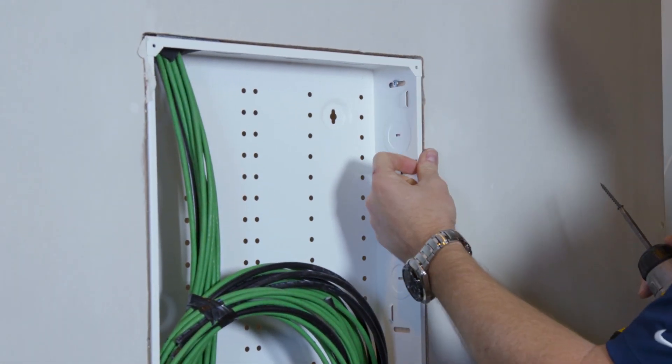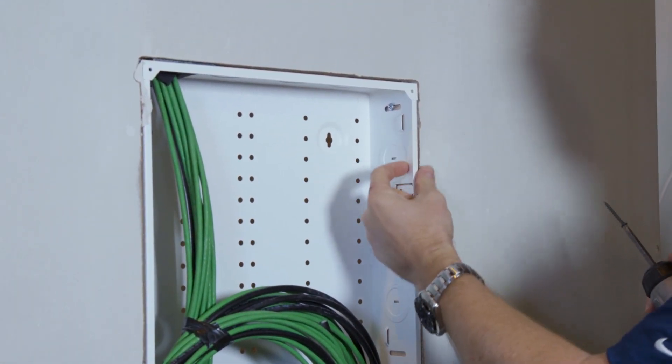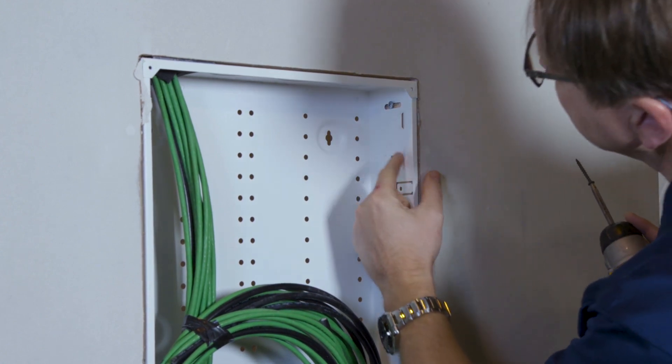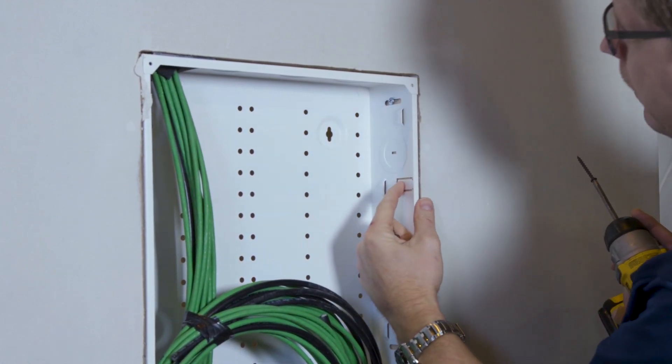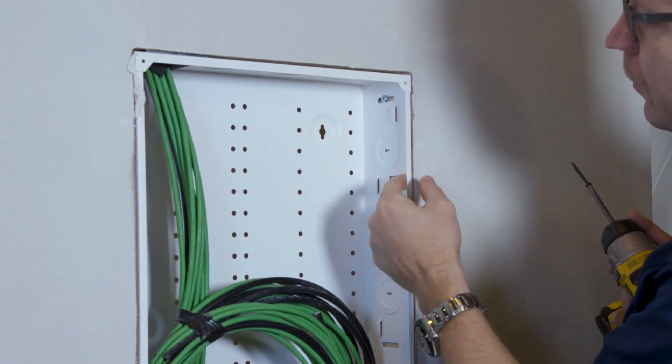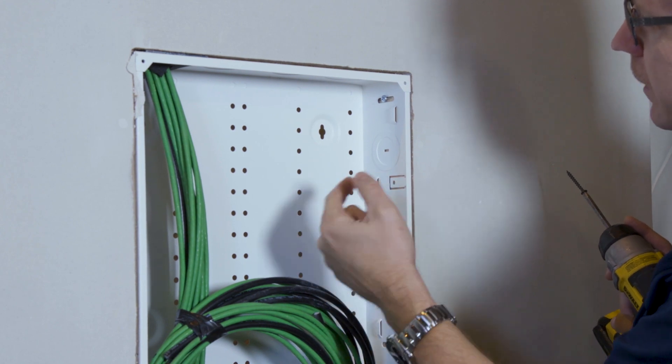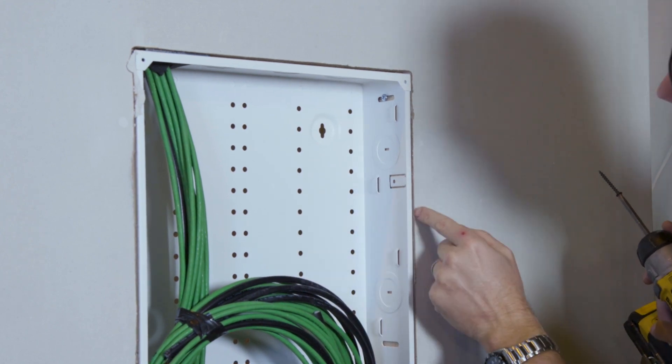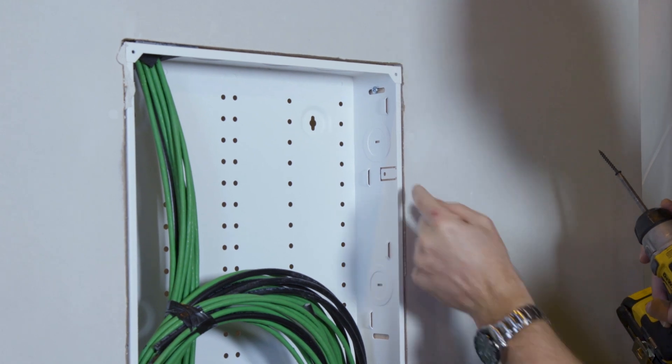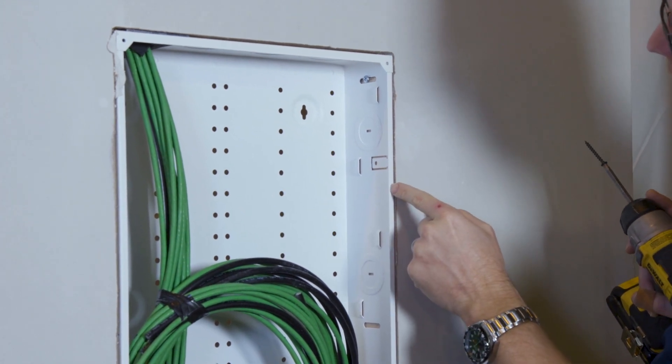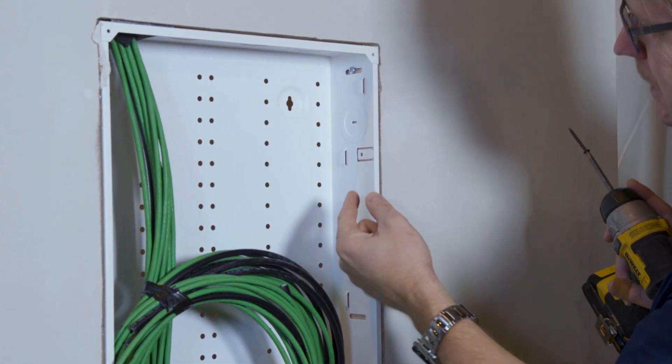So now that we've got it flush, in order to keep it from rocking and moving around in the future, we've provided these little tabs right here. These are open all the way around here so they can flex out. There's a small gap in this box between the stud and the box. It's maybe a sixteenth of an inch.